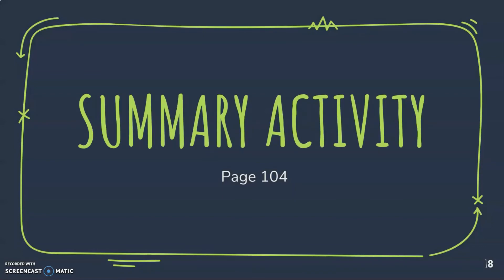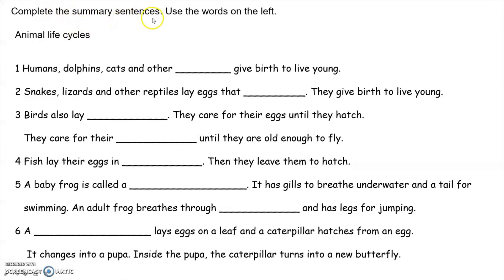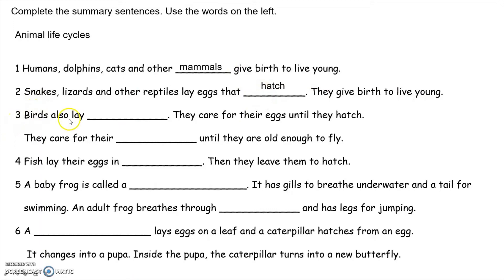Now open your book to page 104 for the summary activity. Complete the summary sentences using the words on the left. In unit 6.1 about animal life cycles — number one: humans, dolphins, cats, and others give birth to live young. These are mammals. Number two: snakes, lizards, and other reptiles hatch from eggs. Number three: birds also lay eggs. They care for their eggs until they hatch, and they care for their chicks until they are old enough to fly.